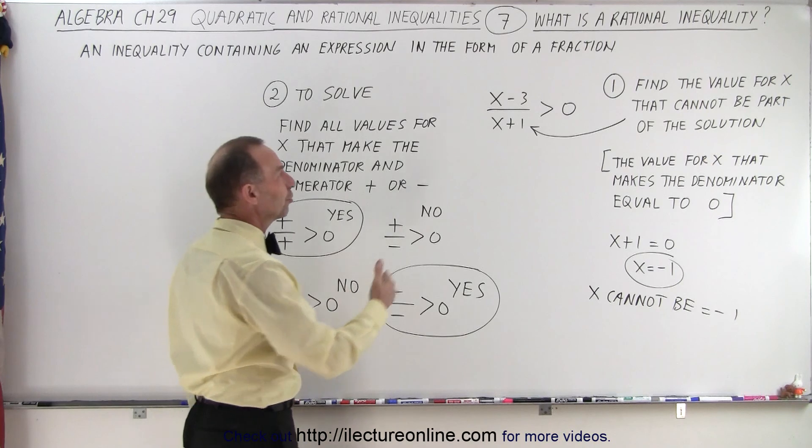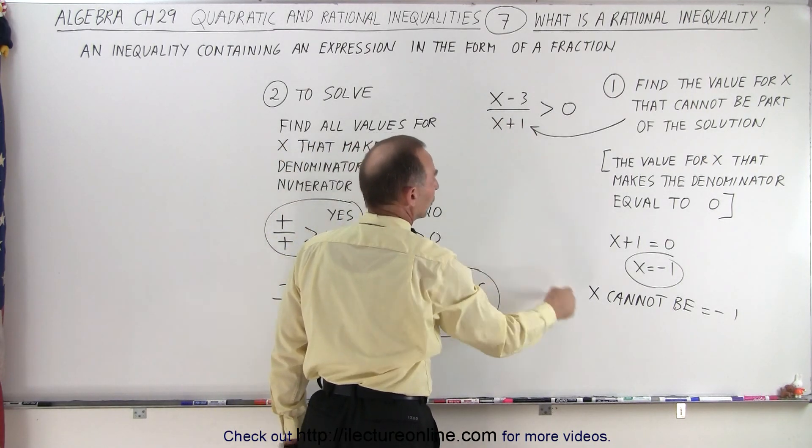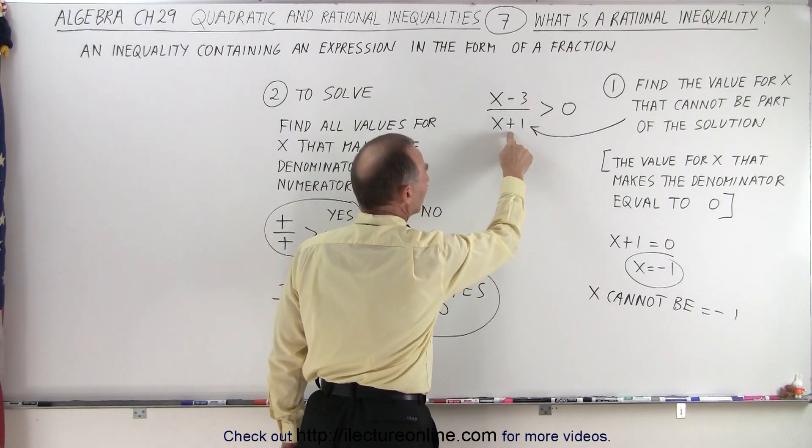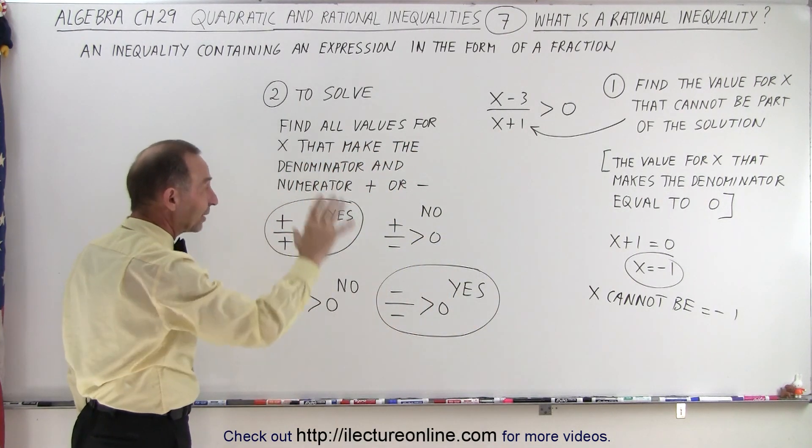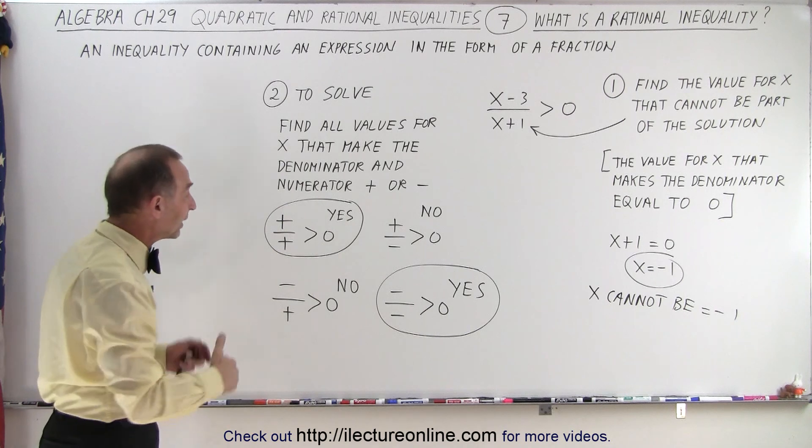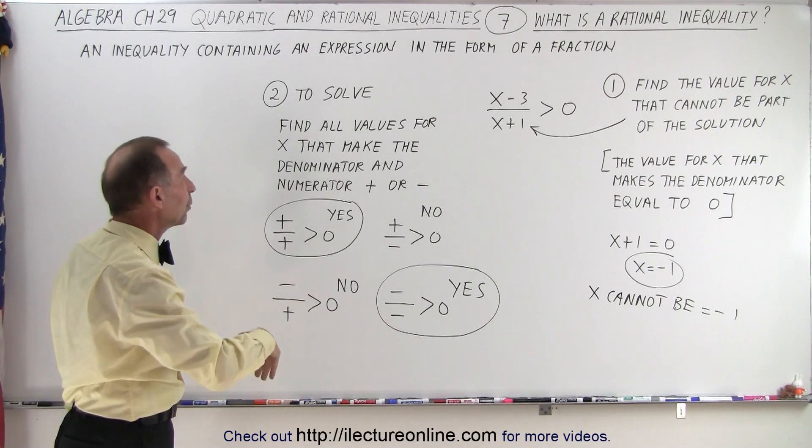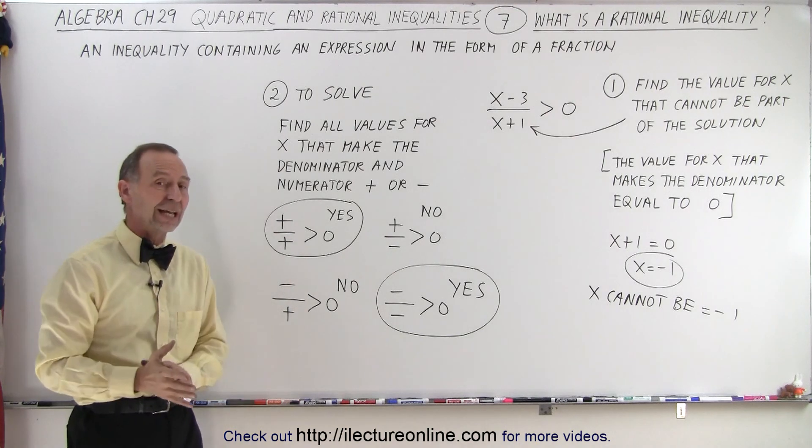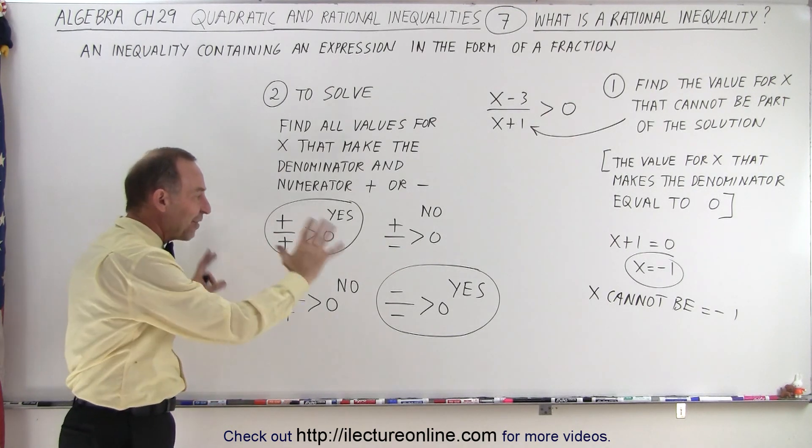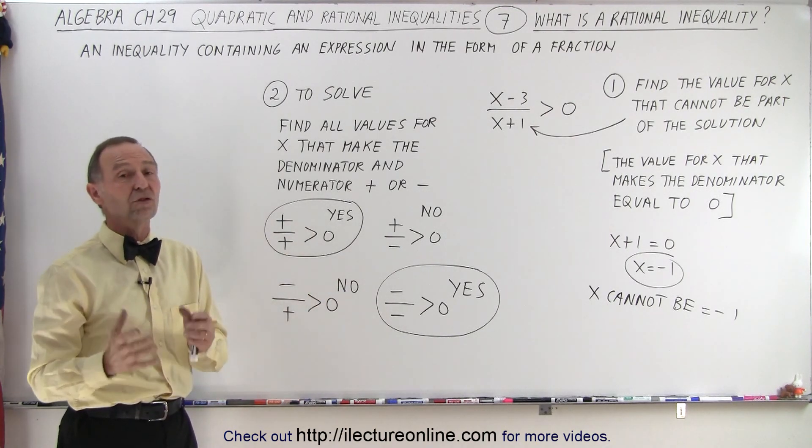We're going to first move everything over to one side, then we're going to look for values that you cannot have, that makes the denominator equal to 0. Then we're going to find the critical points, we'll show you how to do that, and then we're going to set it up so that we find the values of x that make the numerator and denominator either positive or negative, we pair them up, and we find the ranges of all the solutions that we can have.